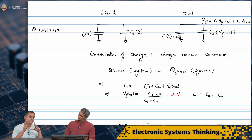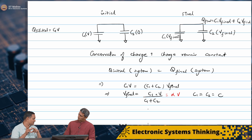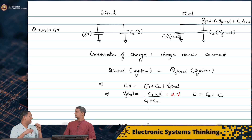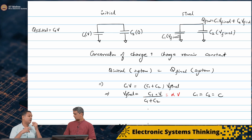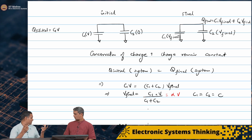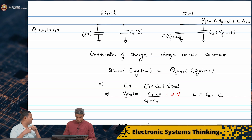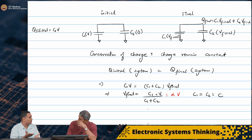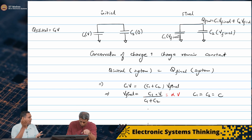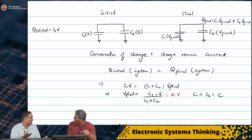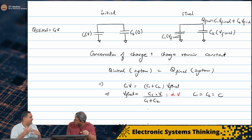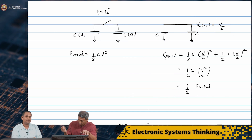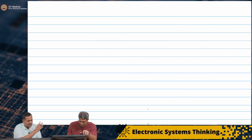In this case, one of the capacitors was discharged and the other was charged. Now, if I were to imagine that both were charged, my gut feeling is that the voltage will be somewhere in between the two. Because one of them has to charge the other — they reach some final value. Why don't we look at that?